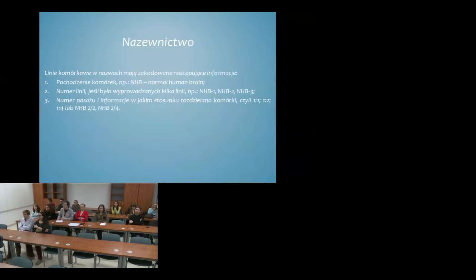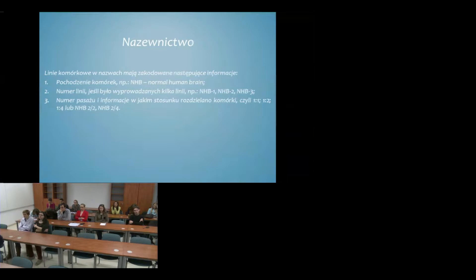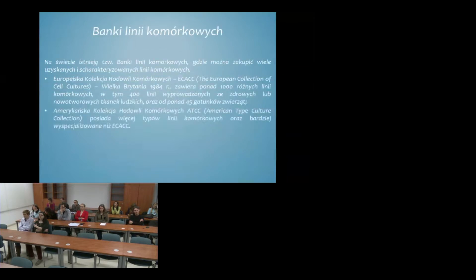Jeśli chodzi o nazewnictwo linii komórkowych, to mają one swoje kody i nazwy. Pochodzenie komórek może wynikać z organu, z jakiego są wyizolowane — np. NHB oznacza Normal Human Brain — a także numer linii, jeśli wyprowadzano kilka linii komórkowych, numer pasażu oraz informacje o stosunku rozdzielania komórek. To są podstawowe informacje zakodowane w nazewnictwie.